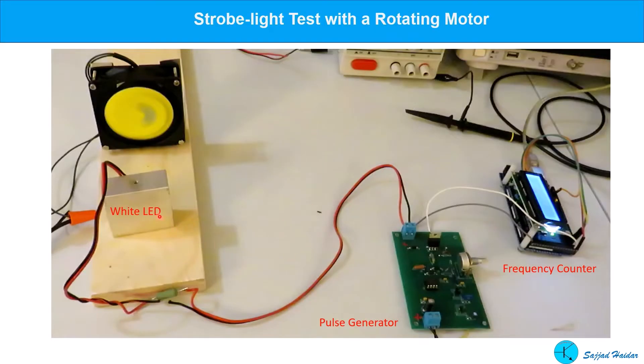Here is the test setup. A rotating object, white LED. This is the driver circuit. And here is the 555 timer and the potentiometer to vary the frequency. And here is the Arduino mega-based frequency counter.